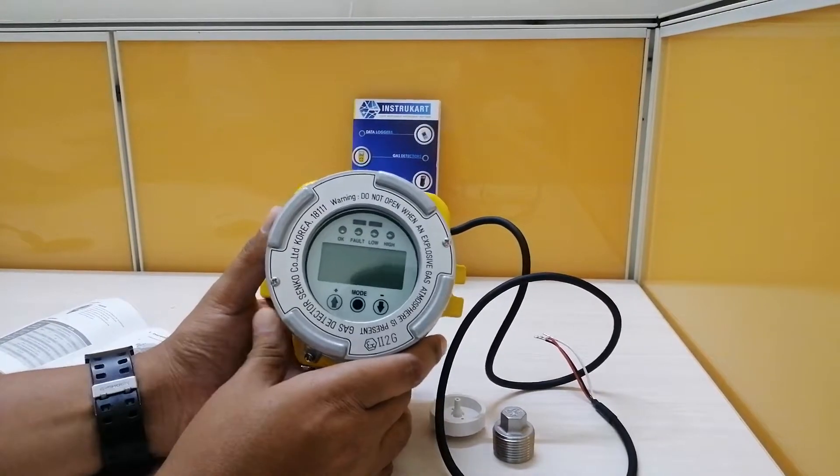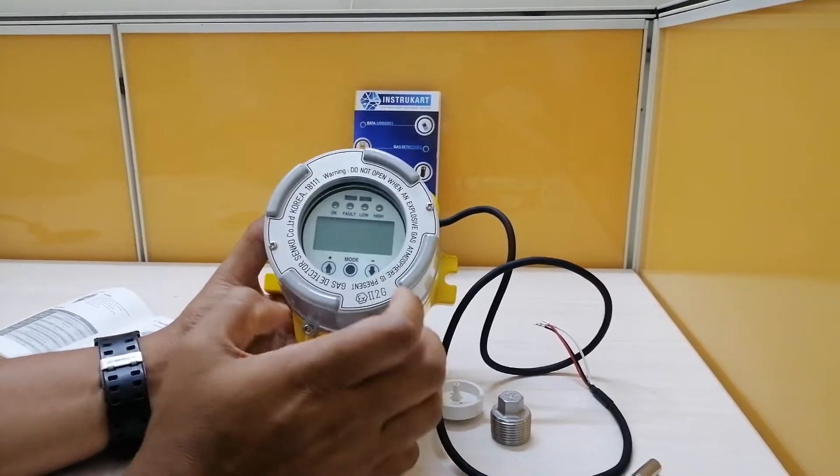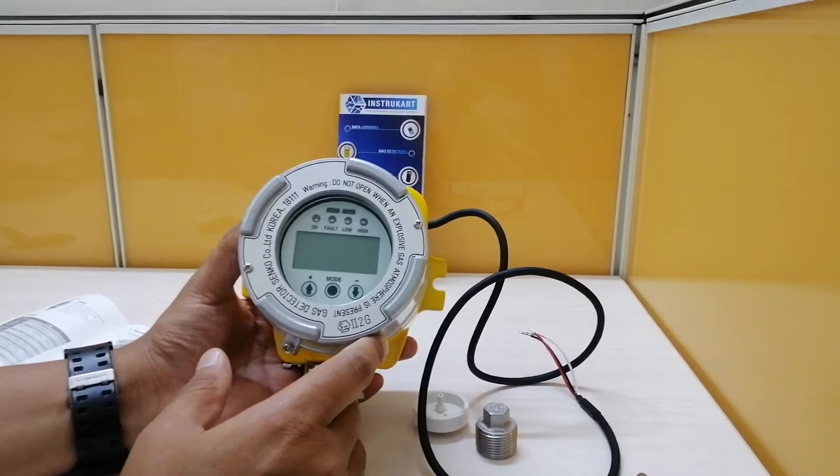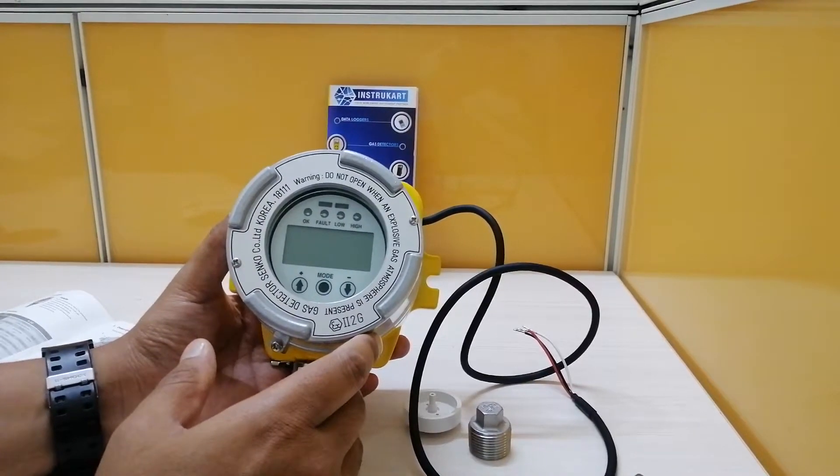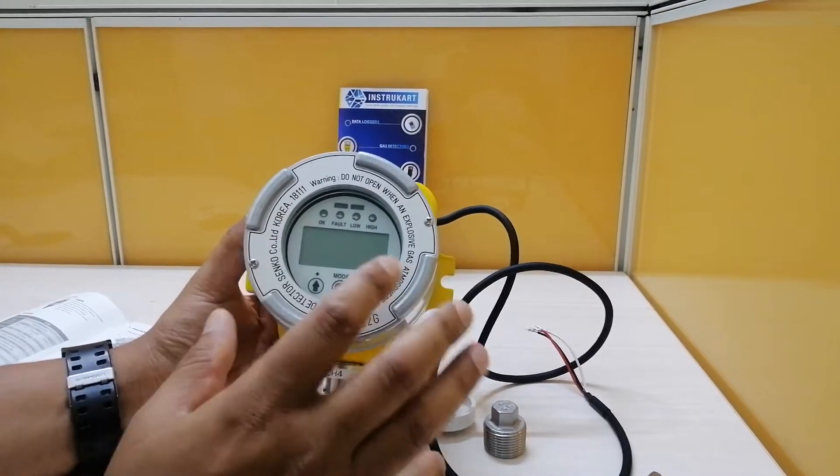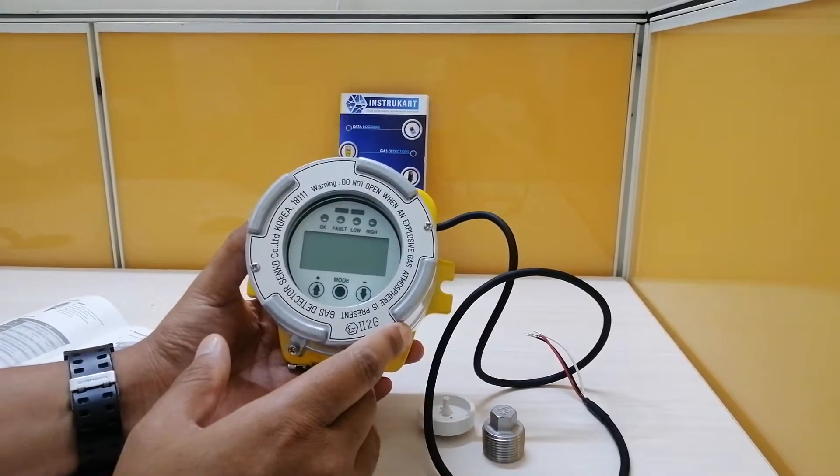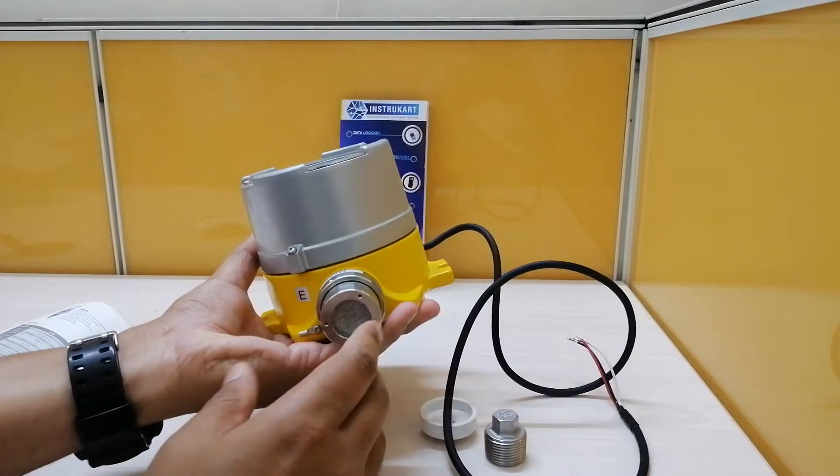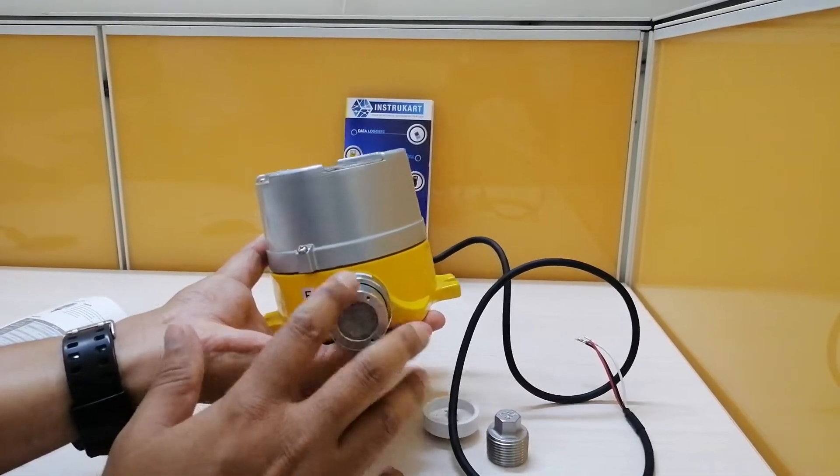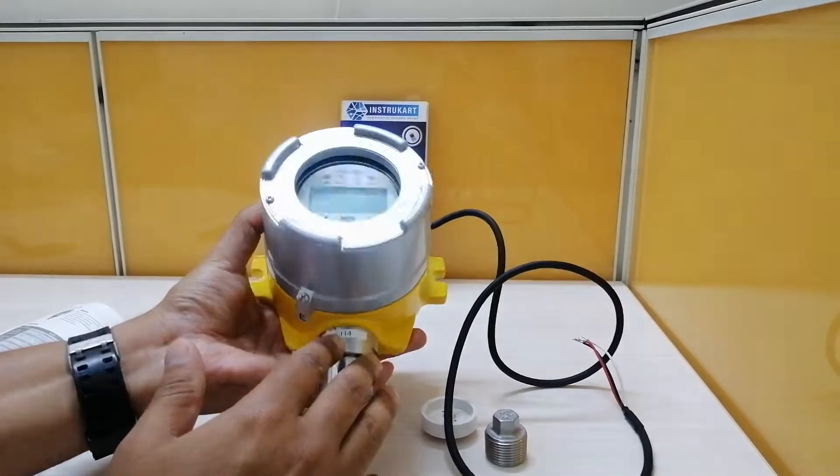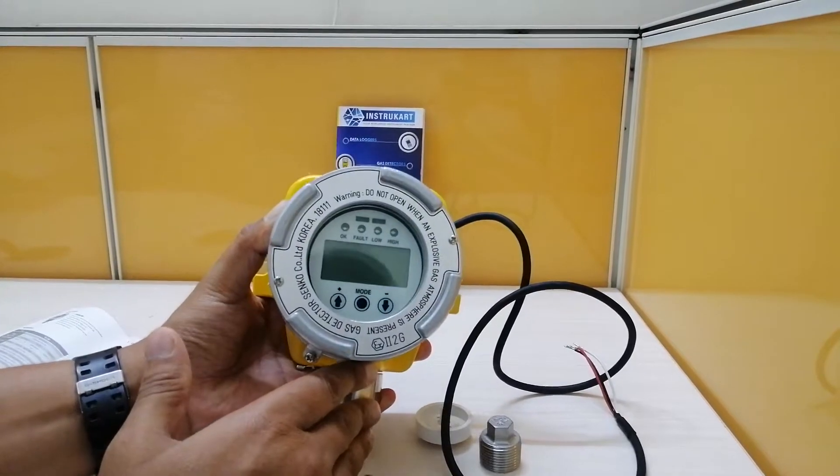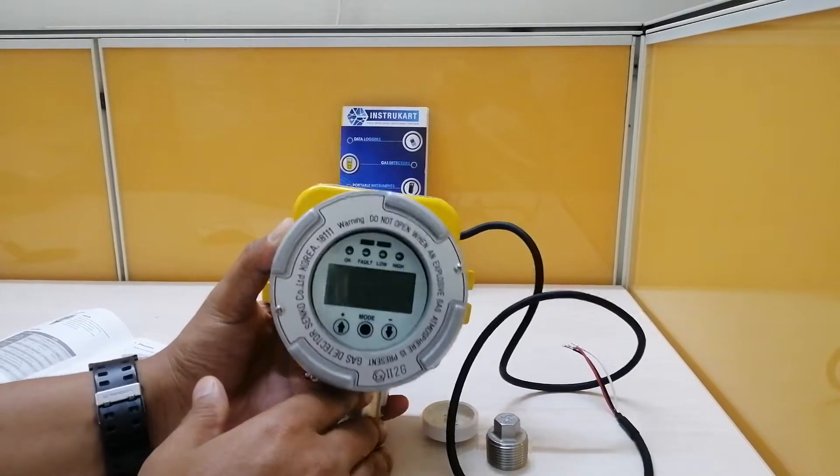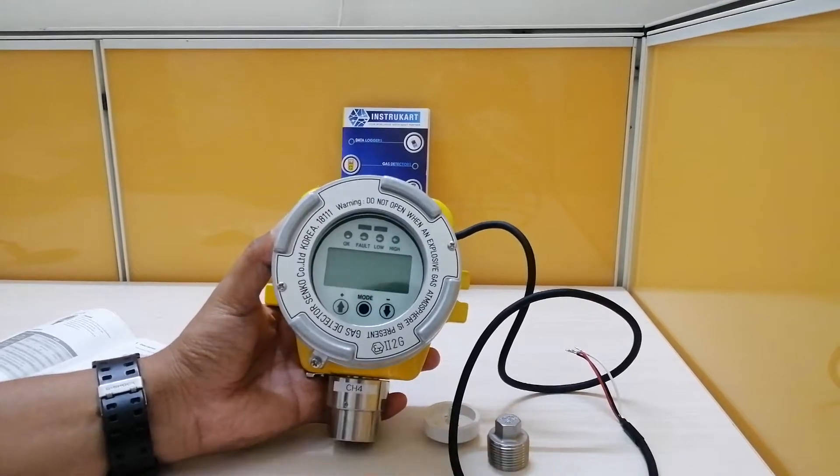This instrument has a model number of SI100. This is an SI100 series from Senco and has both catalytic and IR sensor options with a diffusion type sensor which you can see over here. The measuring range is 0 to 100% LEL and accuracy for this instrument is plus or minus 3% on full scale.